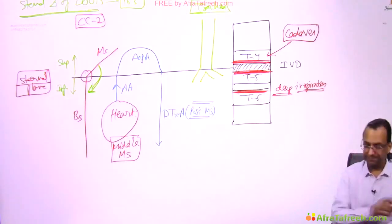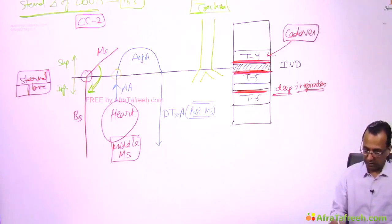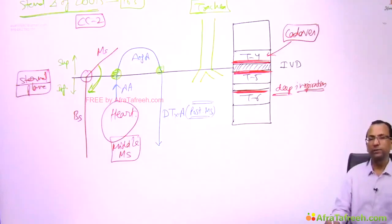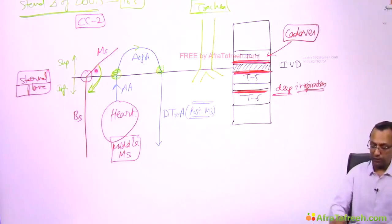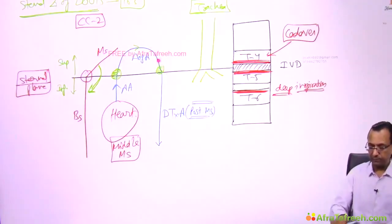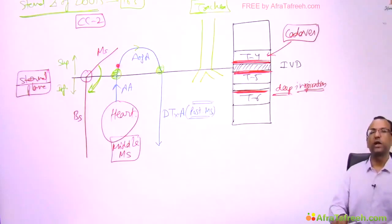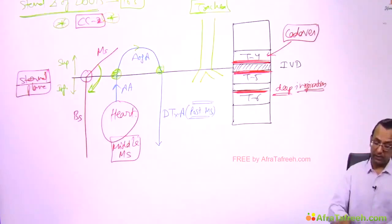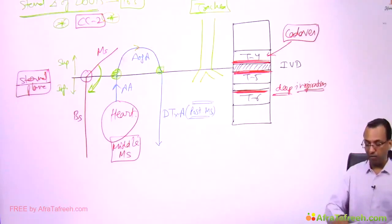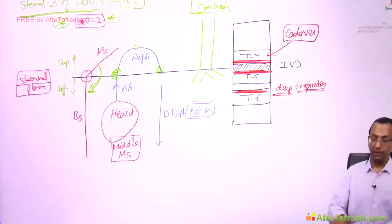The arch of aorta beginning or ending is at the same level — the sternal plane, which corresponds to T4 vertebra according to Gray's Anatomy. If asked which costal cartilage, the arch of aorta begins at costal cartilage number two. So the arch of aorta is in the superior mediastinum, behind the manubrium bone, beginning and ending at the same level: T4 vertebra and costal cartilage number two.